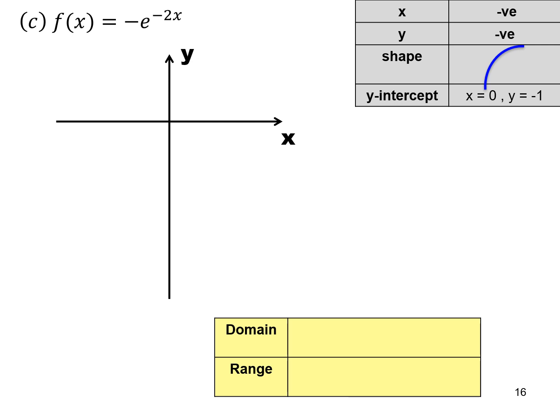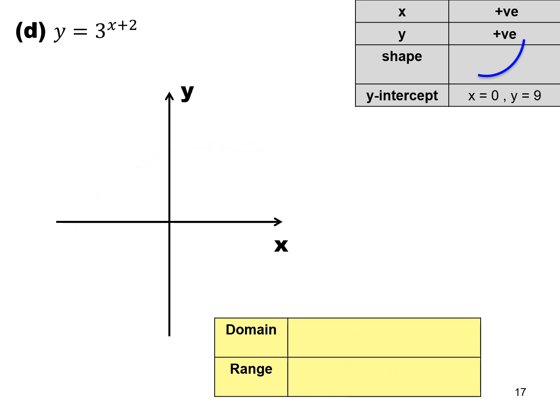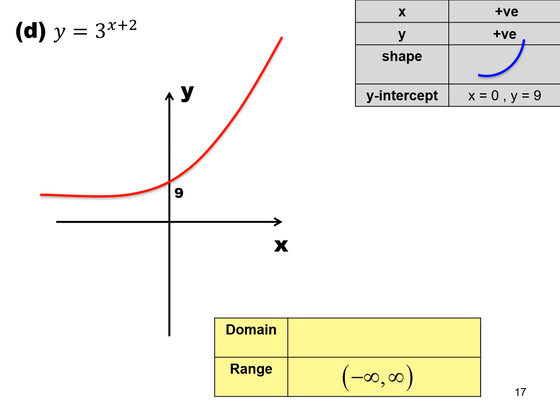(c) For f(x) = −e^(−2x): x is negative, y is negative. At x = 0, y = −1. The shape is below the x-axis, curving downward. Domain is (−∞, ∞), range is (−∞, 0). (d) For y = 3^(x+2): x is positive, y is positive. At x = 0, y = 9. Domain is all real numbers, range is (0, ∞).